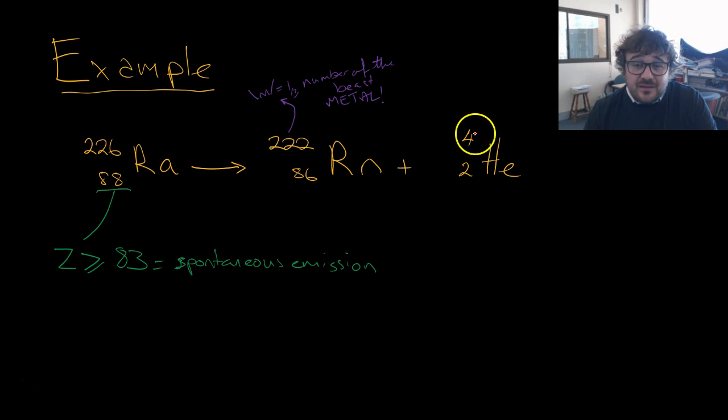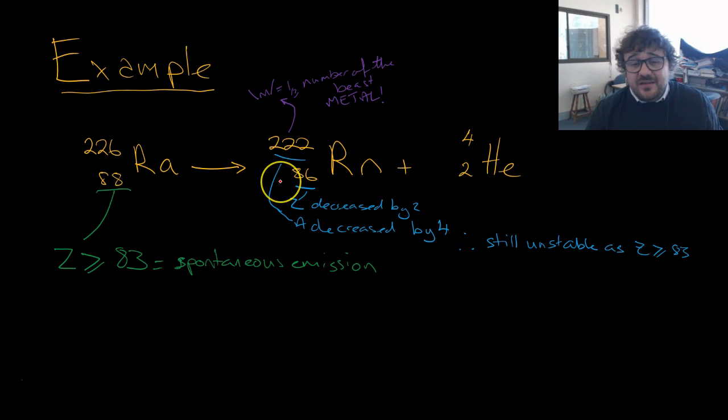because it's lost 4 overall. So 4 plus 222 gives you 226. Z decreases by 2, A decreases by 4, and it's still unstable, so it's going to continue to decay.